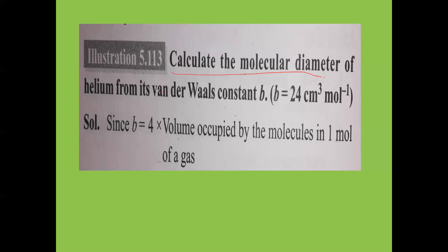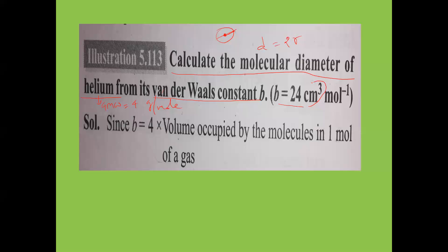Next: calculate the molecular diameter of helium from its Van der Waals constants. Diameter = 2 × radius. Gram molecular weight of helium is 4 g/mol. B value is given as 20 cm³; convert to liters: 1 cm³ = 1/1000 liters, so B = 20/1000 = 0.02 liters·mol⁻¹.